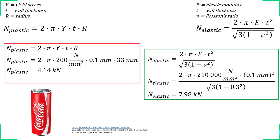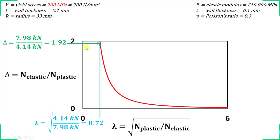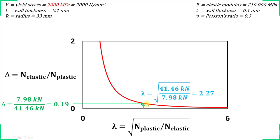Here is a small example — the geometry is basically like a coke can. We input the data and determine the loads in Newton or kilonewton. This diagram can be plotted by changing the yield stress or the thickness. For example, for the coke can, increasing the yield strength shifts the point on the diagram, and doing this for many points produces the whole function.